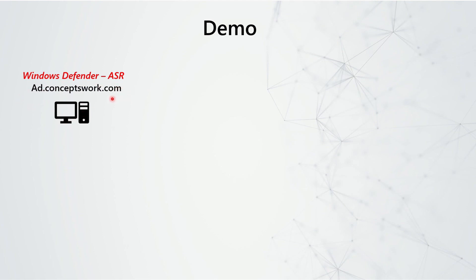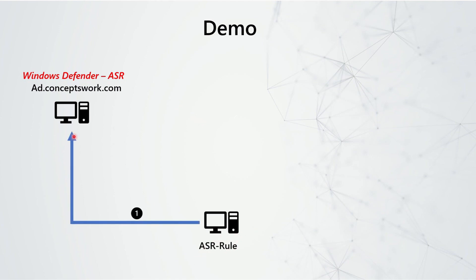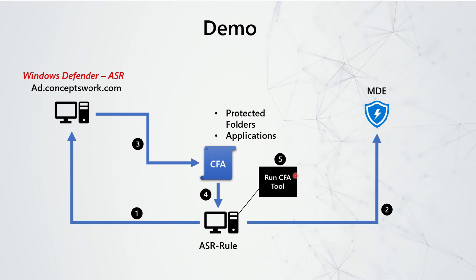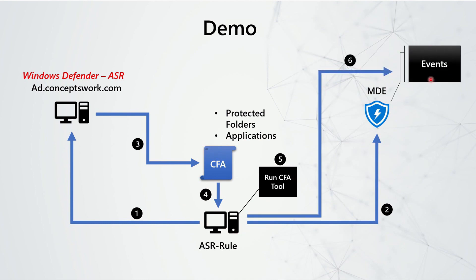For this particular demo, I have a machine which is my DC — ad.conceptswork.com — and on that DC a GPO is created named Windows Defender hyphen ASR. I have a client machine named ASR hyphen rule, which is domain joined and MDE onboarded. I will use this GPO to enable controlled folder access, including the protected folder list and whitelisted applications, and then apply it to my client machine. Then I'll run the CFA tool, which will generate events on the machine as well as on the MDE portal.